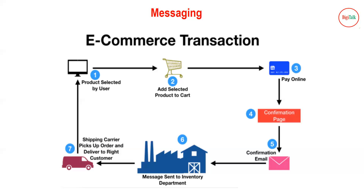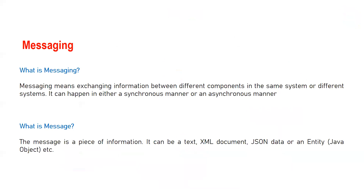The invoice contains your address, phone number, vendor address, and other information — all that data is being transferred from one location to different locations, or from one application to different applications, with the help of a certain kind of message. The message is essentially your data. So messaging means exchanging information between different components in the same system or in different systems.